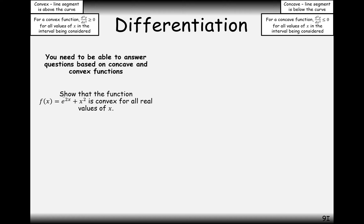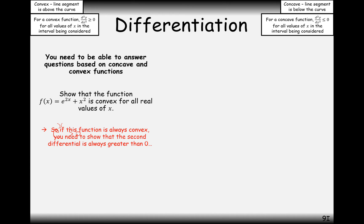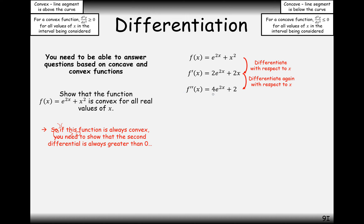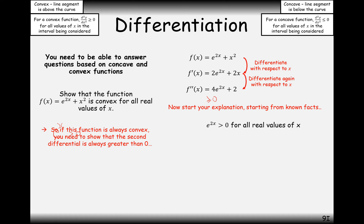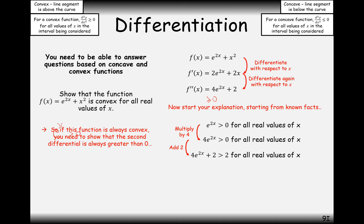Next function — something slightly more difficult. Show that the function e^(2x) + x² is convex for all real values of x. Differentiate it once and differentiate it again to get the second derivative. We know that e^(2x) is always greater than zero for any real x. If we multiply by 4, that is also greater than zero, and adding 2 means it's definitely greater than zero for any real value of x. Therefore it's always going to be convex.